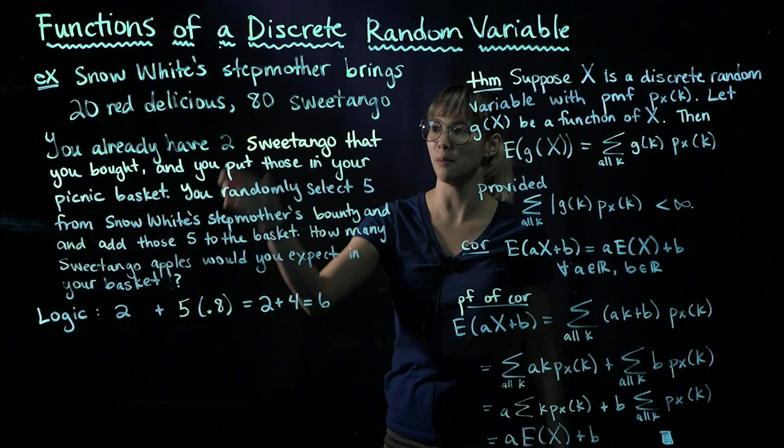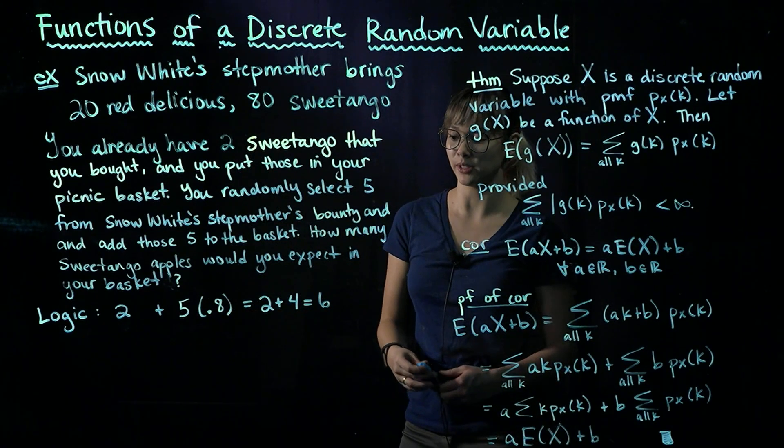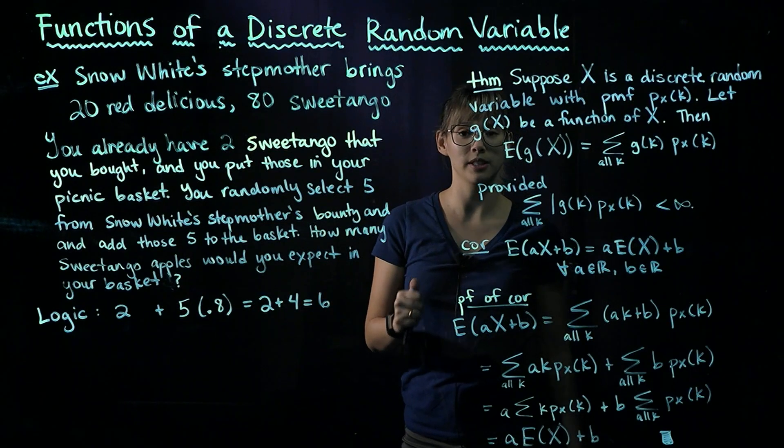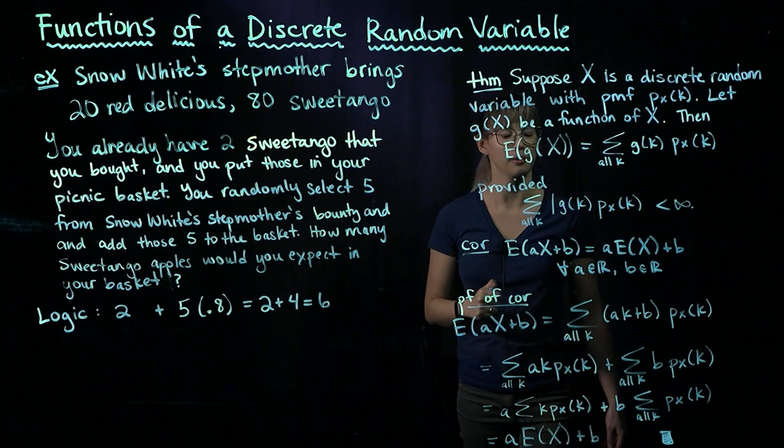You would expect from Snow White's stepmother to have 5 times 0.8 Sweetango apples. So logic would tell you you would end up with six as your expected value for the number of Sweetango apples in your picnic basket.